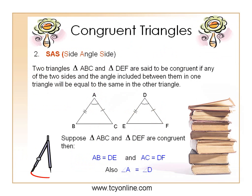Now let's see the second method: SAS, that means Side-Angle-Side. Two triangles are congruent if two sides and the included angle of one triangle are equal to the two sides and the included angle of the other triangle. Now look at triangles ABC and DEF — here side AB is equal to side DE, side AC is equal to side DF, and included angle A is equal to angle D. Therefore we can say that triangle ABC is congruent to triangle DEF.